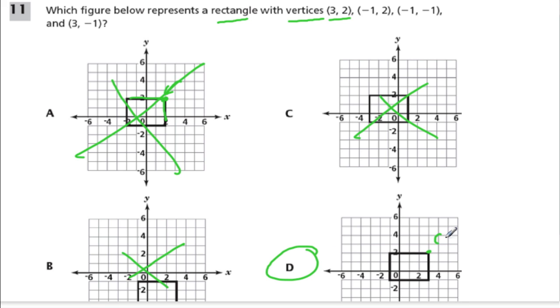And just to verify, this point is 3, 2. This point is negative 1 and then up 2. That was the next point. This point down here is negative 1, negative 1, right there. And this point is 1, 2, 3, down 1. So it's 3, negative 1. So D is the answer.